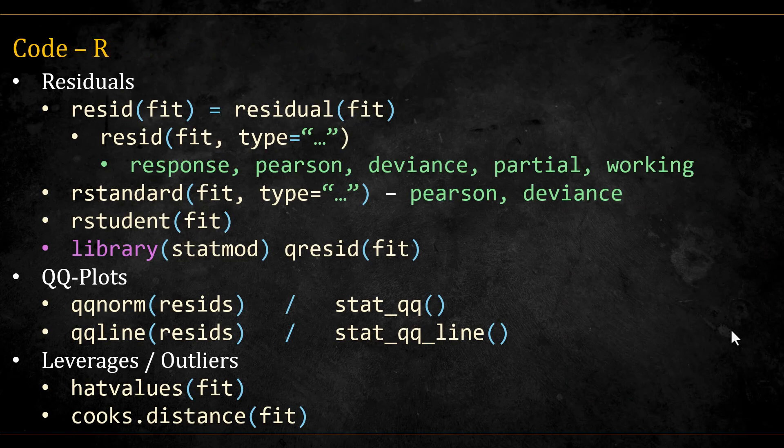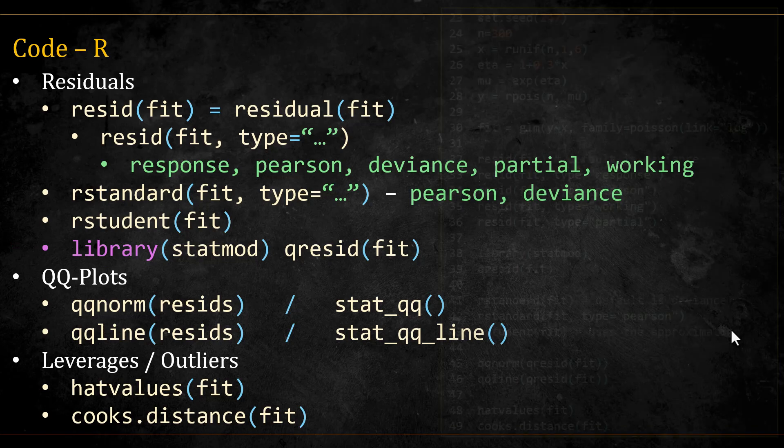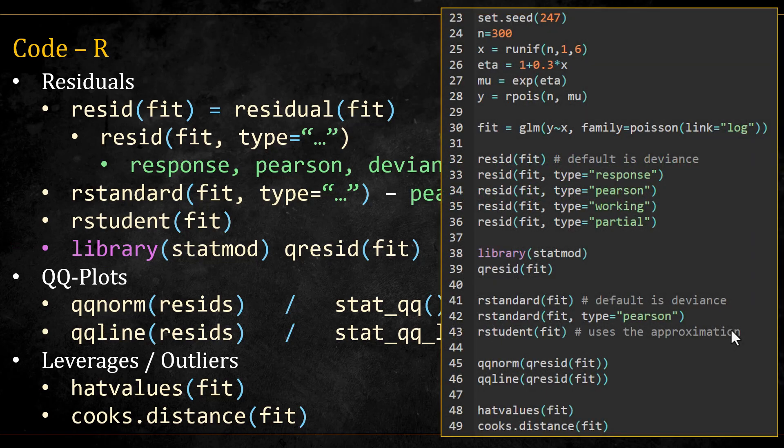Here are the R functions we can use. For the resid function, we can specify response, Pearson, deviance, partial, and working residuals types. The default for GLM is deviance. The R standard function can operate on the Pearson or the deviance. The R student will give the deletion residuals approximation mentioned before. If we want to get the quantile residuals, we can use the qresid function from the statmod library. The rest of the functions are the same. Here is a simple script that summarizes all of these commands. You can pause the screen to have a better look.